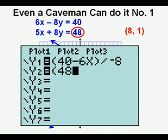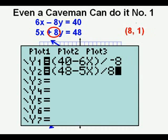We go down to Y2 and enter the opening parentheses and then 48. We move over the 5x on the left by subtracting the 5x on the right side. To finally solve for y, we close the parentheses and divide by the coefficient of y, which is 8.